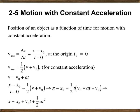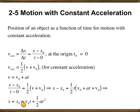What you get is this expression: the position of the object as a function of time is initial position plus the initial velocity times t plus one-half the acceleration times t squared. This is true only if you have constant acceleration. If acceleration equals zero, you simply get x = x₀ + v₀t, which is the formula for position in the case of constant velocity.